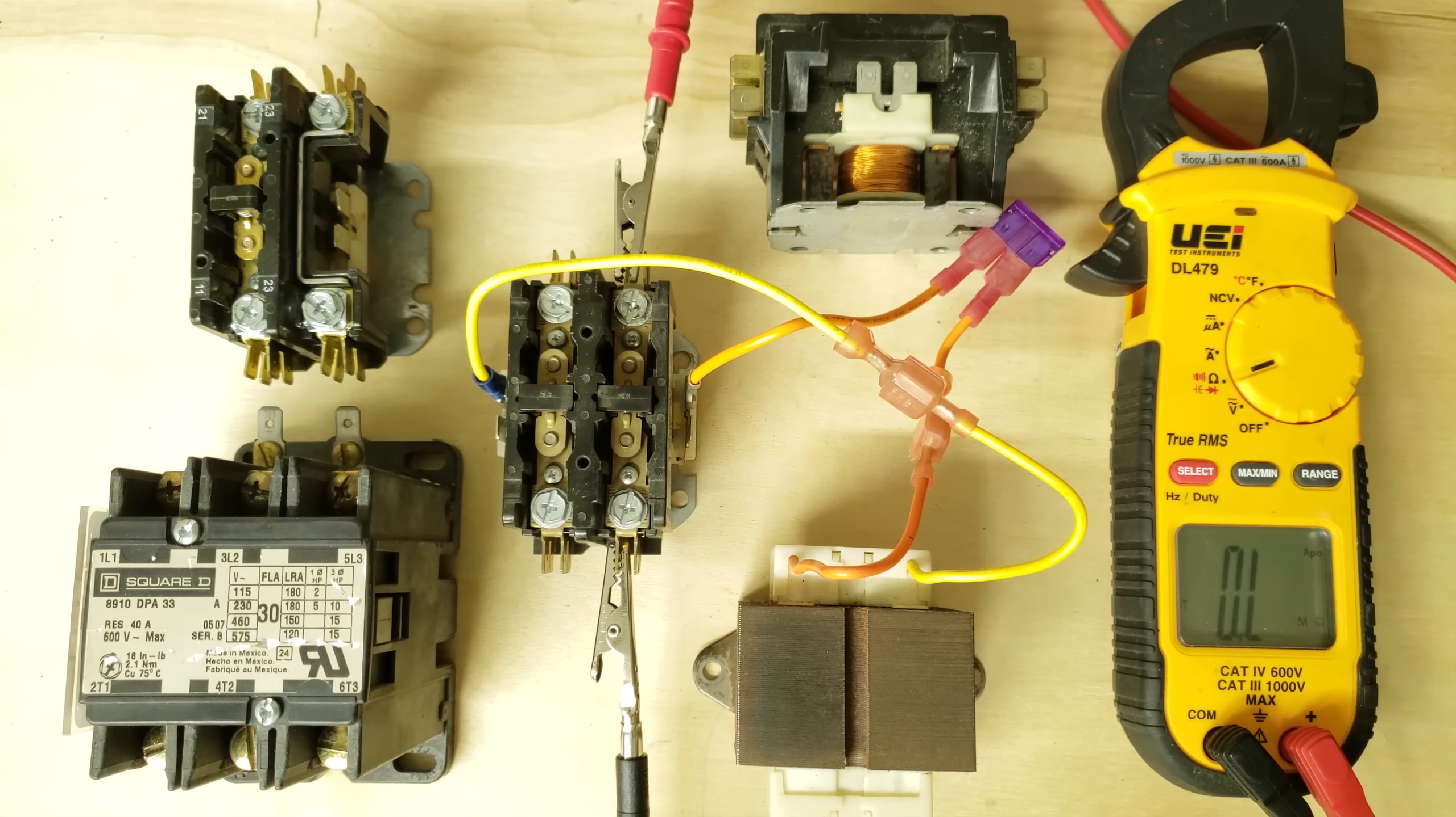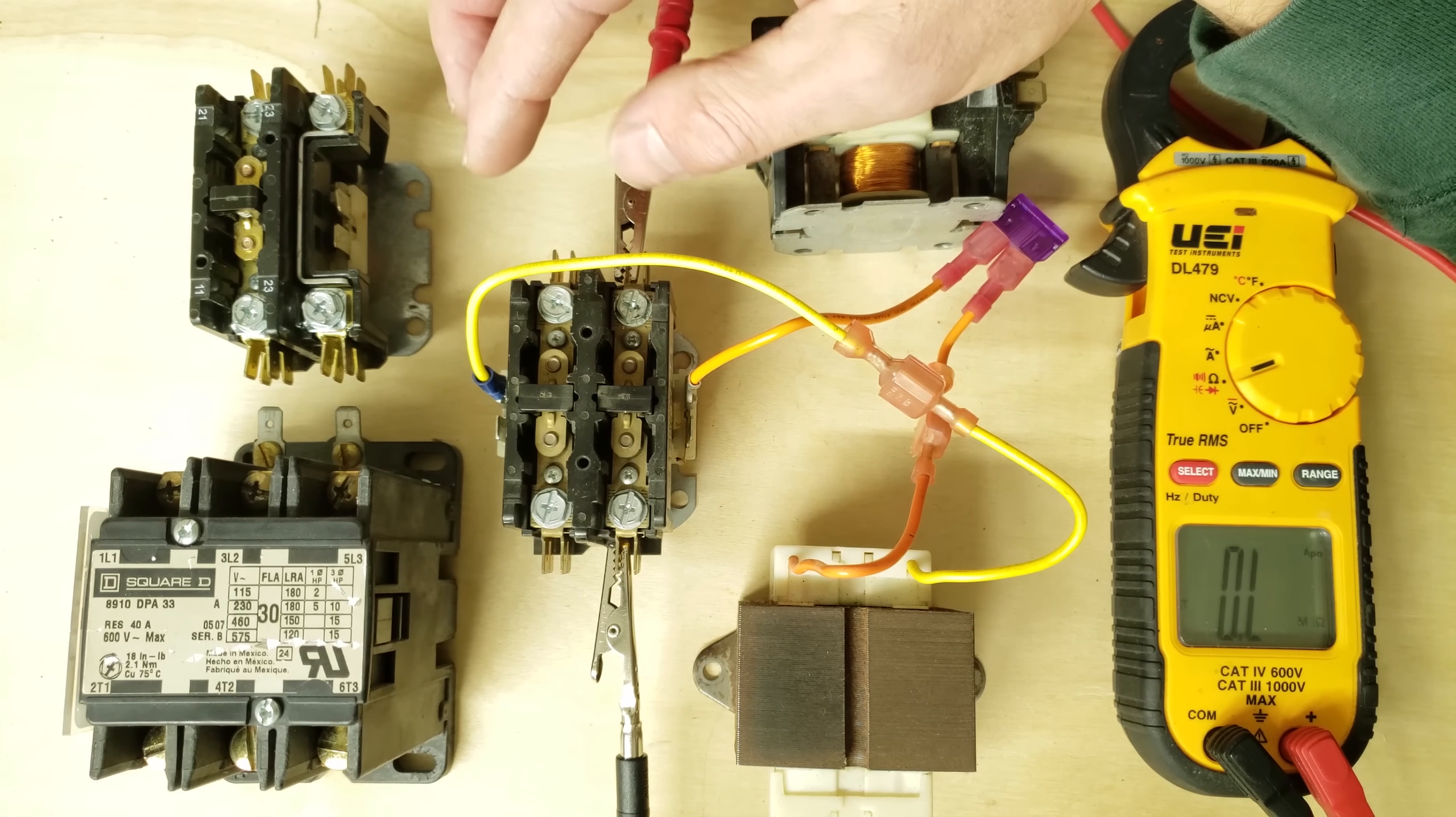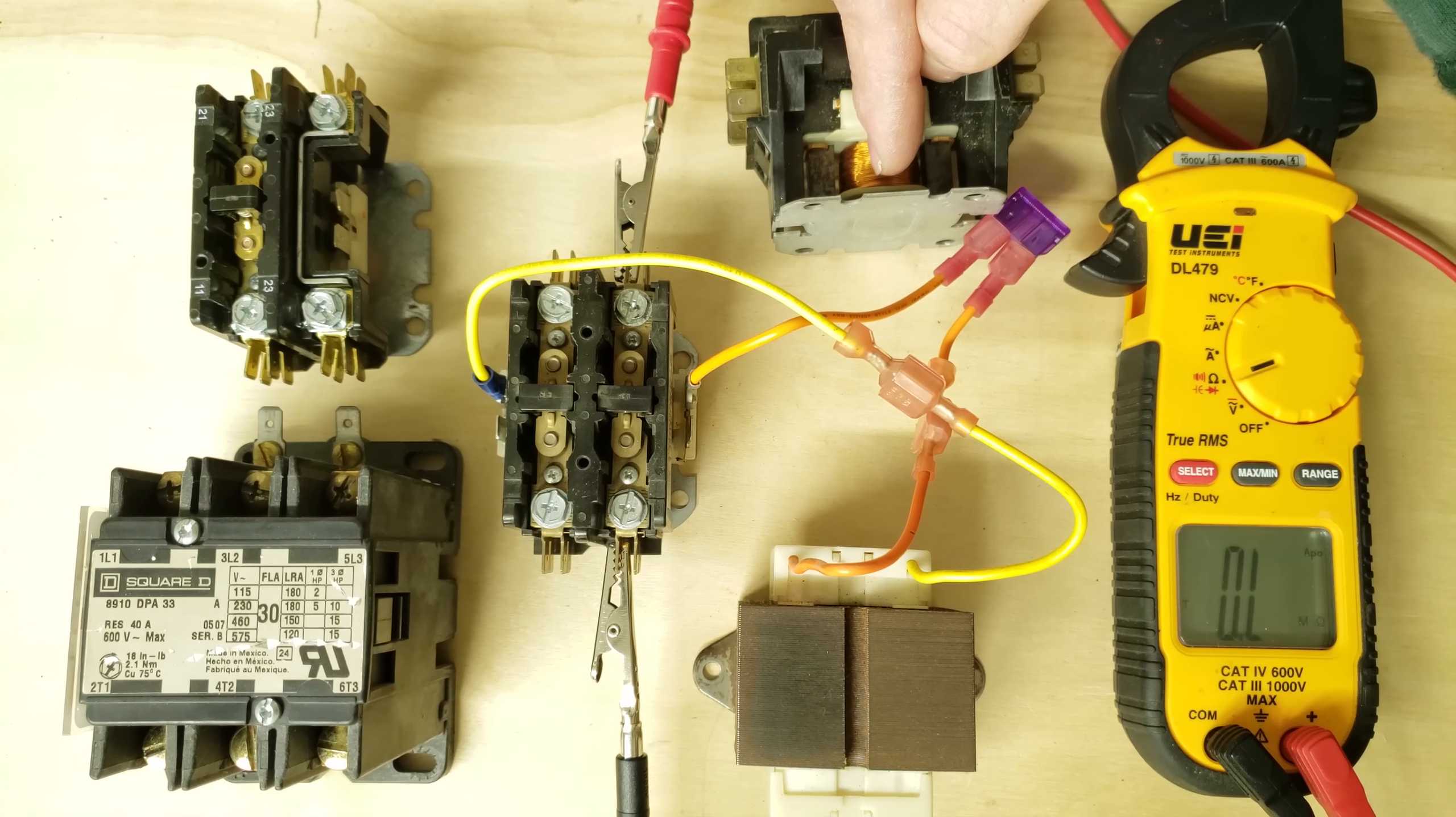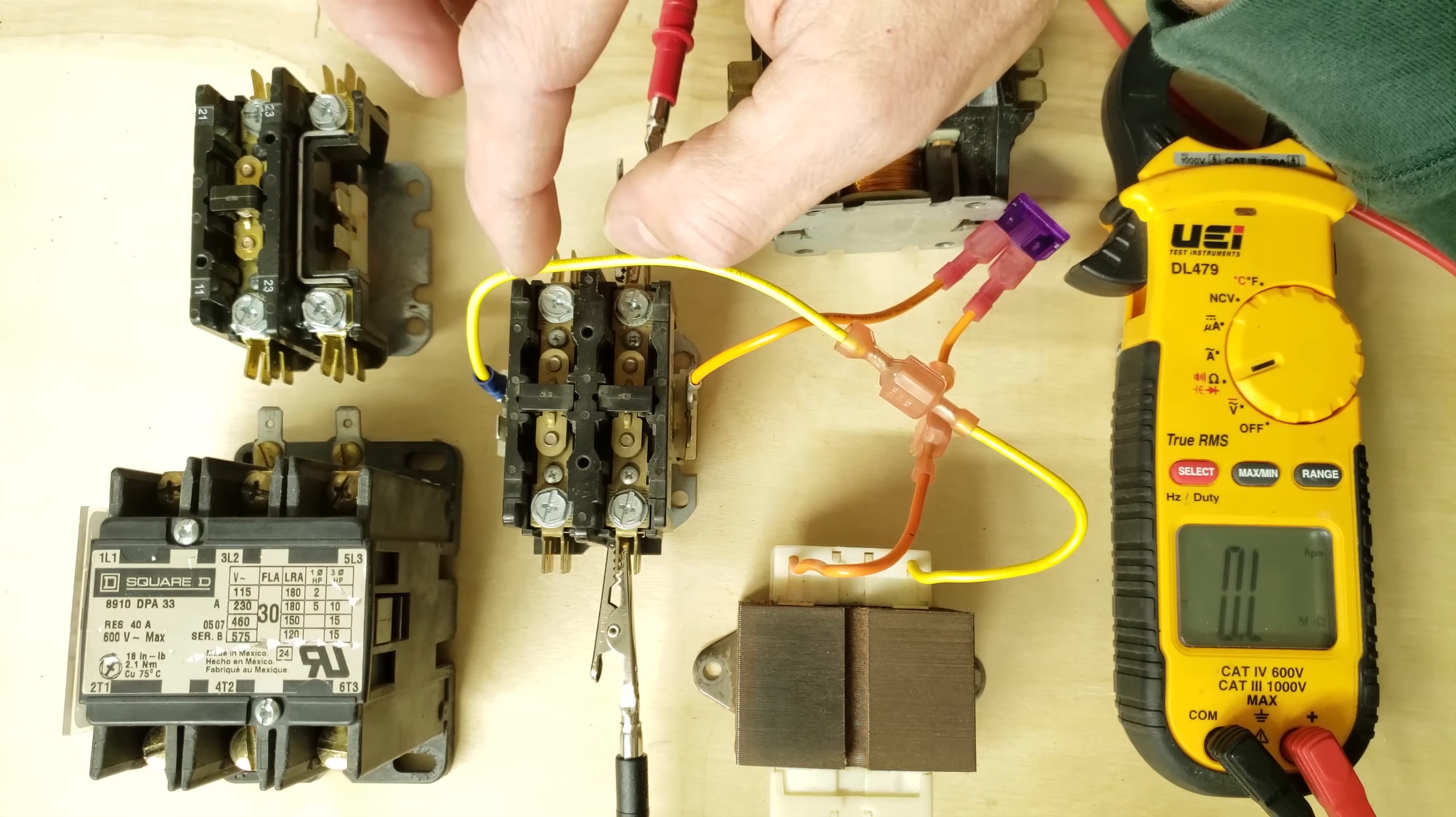Before we get started I just want to show how the contactor works and explain the differences. So in this case we have a two pole contactor so it has two sets of normally open contacts that will close when you apply power onto the coil. Here you can see an exposed coil on the side and we're just applying the 24 volts onto the side in order to allow the voltage to come across here.